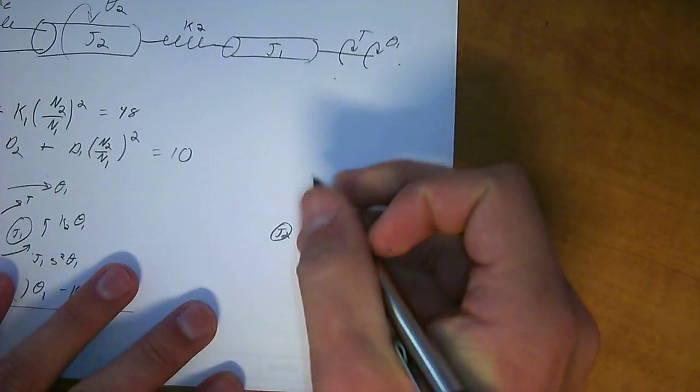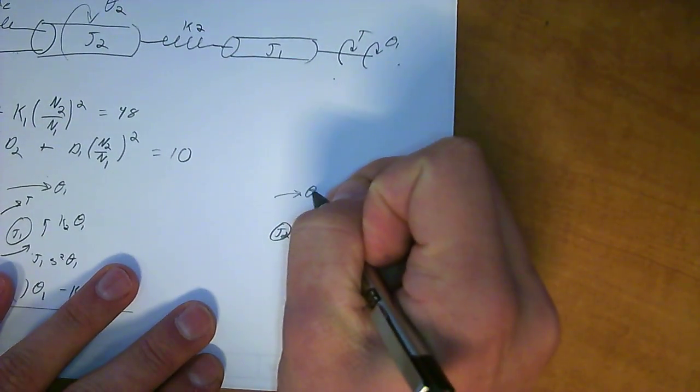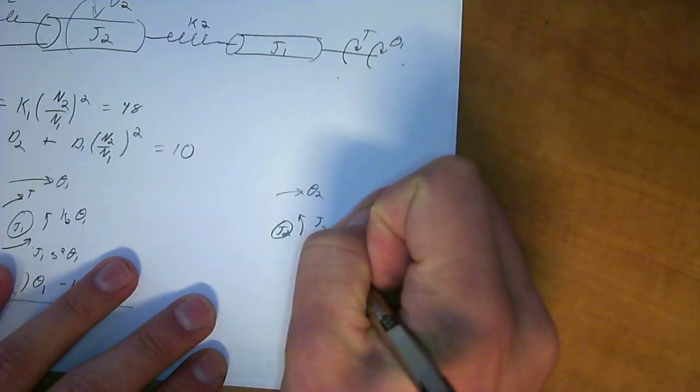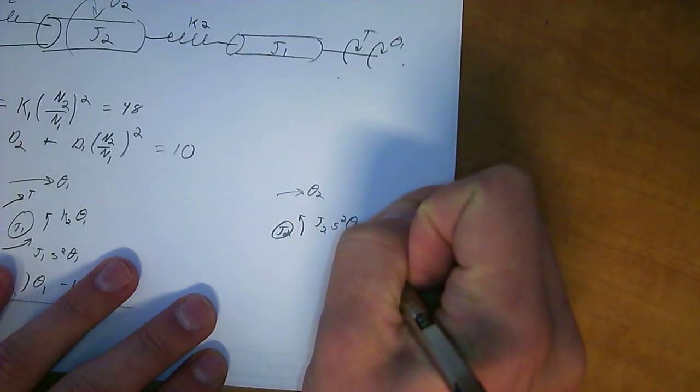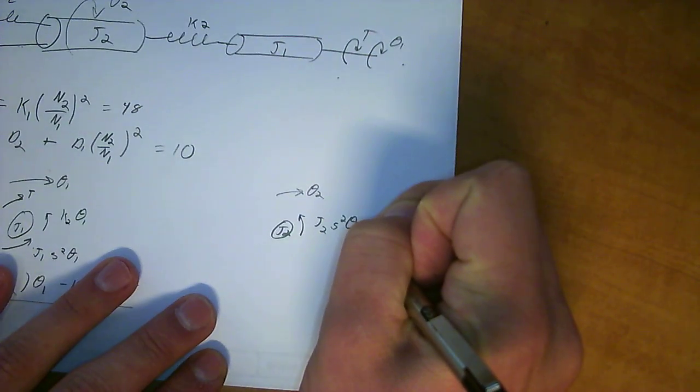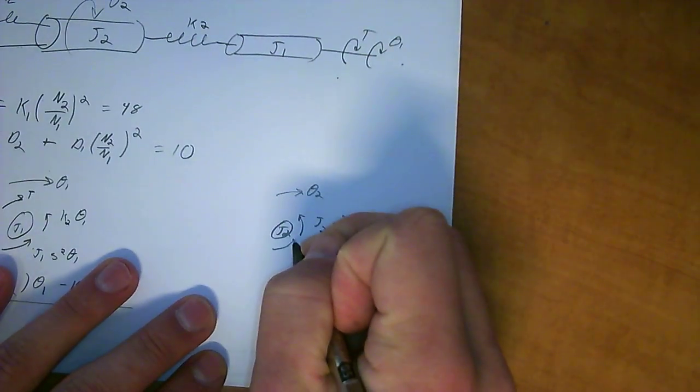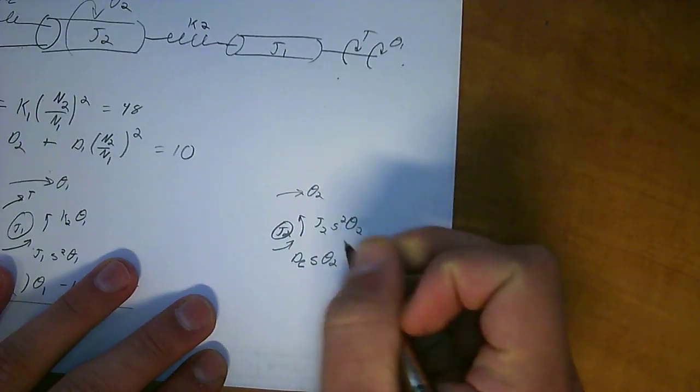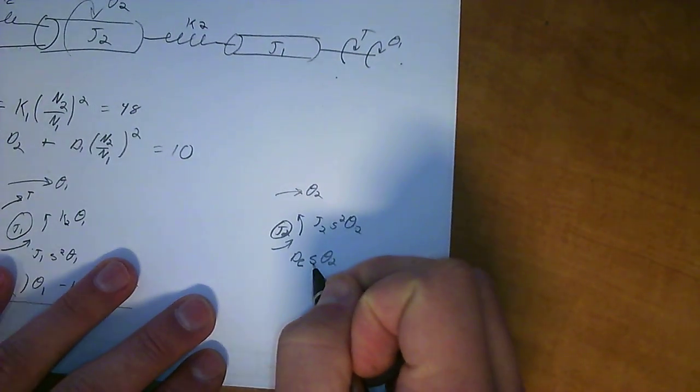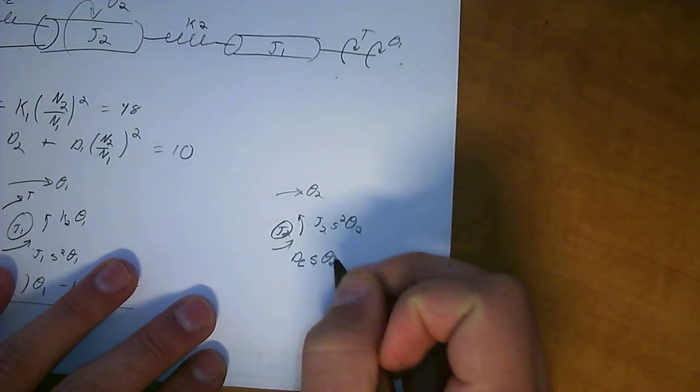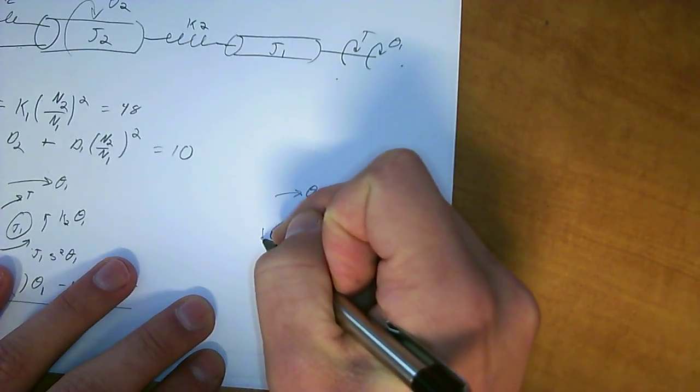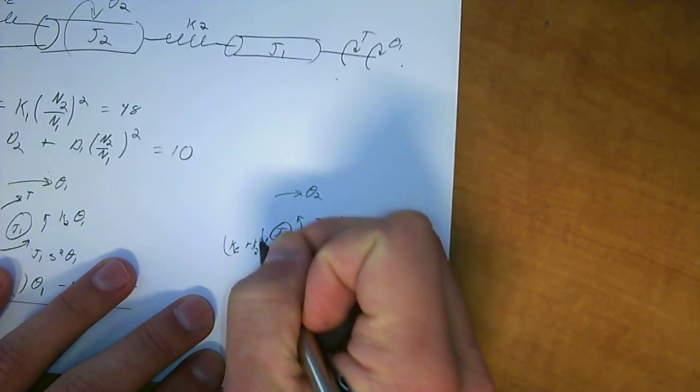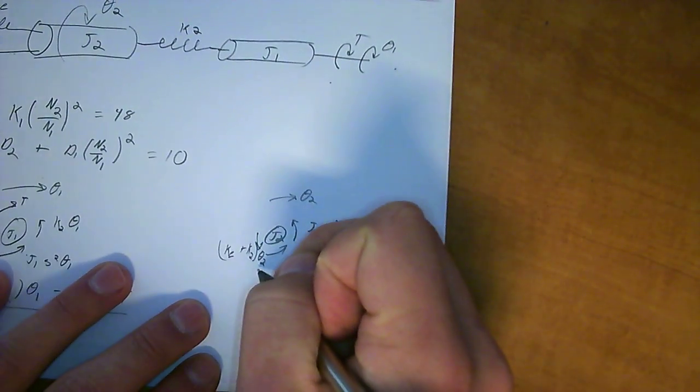And then for the other mass J2, we've got Theta2 rotating this direction. We're going to have the resistance due to motion, J2 S squared, because we're moving J2 and J1 is held still. And then you have the damping, the equivalent damping, times S times Theta2, because it's damping times velocity times the displacement.